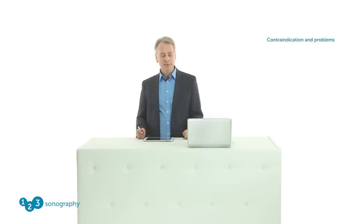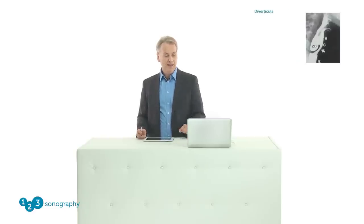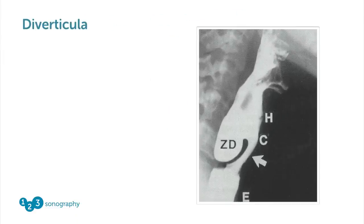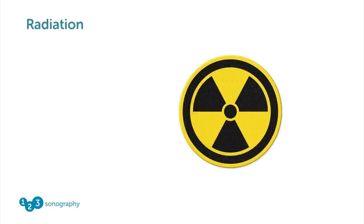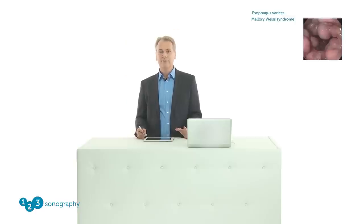There are several contraindications if you perform a TEE. Don't perform a TEE in patients who have a swallowing disorder that has not been clearly evaluated, because you can run into a diverticulum — this is probably one of the most frequent causes of esophageal perforation. Also beware of patients who underwent radiation therapy, as they could have obstruction of the esophagus. If patients have known esophageal varices, for example in liver disease or Mallory-Weiss syndrome, they could bleed. If we have the suspicion, we always perform a gastroscopy first. If the degree of varices is more than 2b, we would refrain from performing TEE.